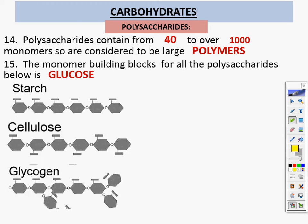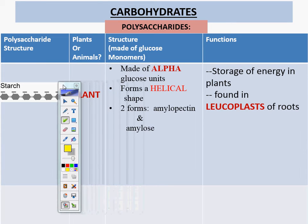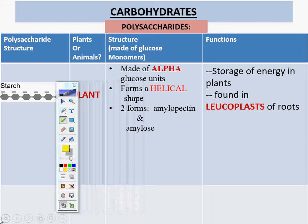Let's go over those right now. Starch is found in plants and is made of alpha glucose units. It forms a helical shape and has two forms: amylopectin and amylose. It stores energy in plants, found in leukoplasts of roots. Did you know a potato is a root? You pull it up from the ground.